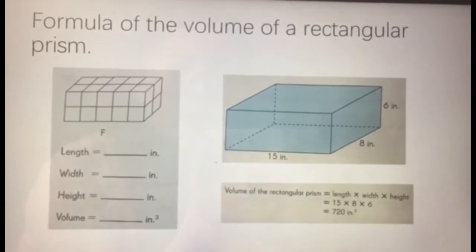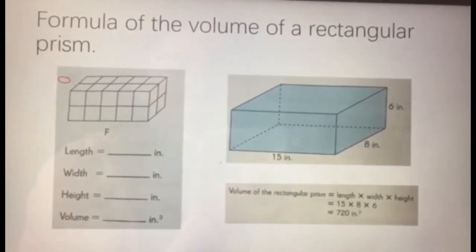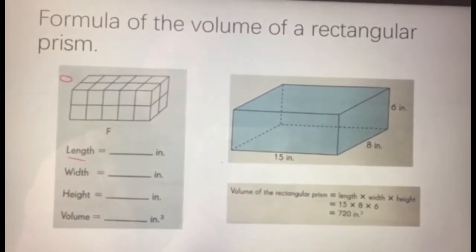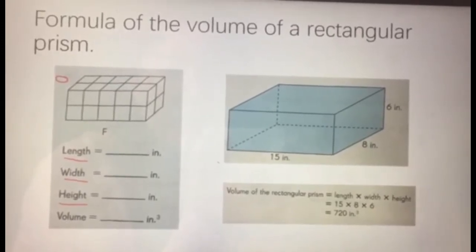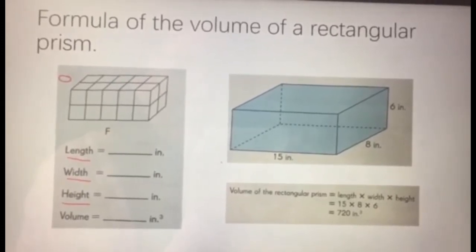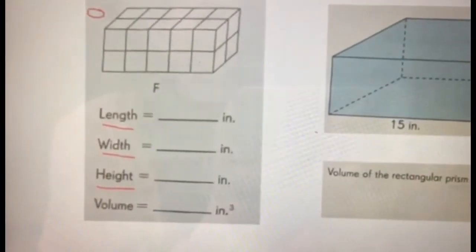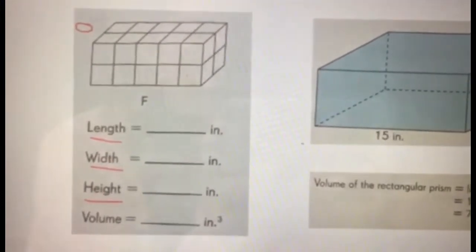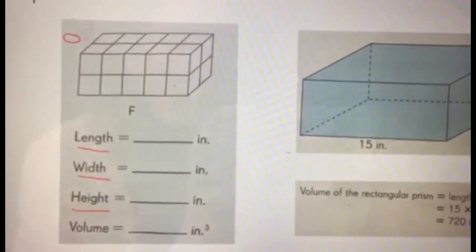In the other practices, this is what we've been doing. You have a rectangular prism made up of unit cubes, and you figure out the length, the width, and the height by counting the number of unit cubes. Then you do multiplication of these three numbers and find out the volume, which is actually the number of unit cubes.